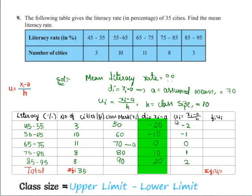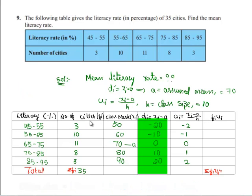As we have reduced xi into ui, the product of fi and ui we have to find. Hence fi into ui is 3 into minus 2, which is minus 6, 10 into minus 1 is minus 10, then 0, 8 and 3. The total sum of fi ui is minus 2.